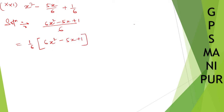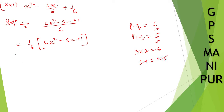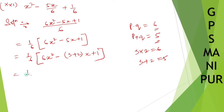Any two numbers P and Q, such that if you multiply P into Q you get 6, and P plus Q you get 5. So any two numbers — multiply to get 6, this is simply 3 into 2, and 3 plus 2 is 5. So write down: 1 by 6 times (6x squared minus 3x minus 2x plus 1).